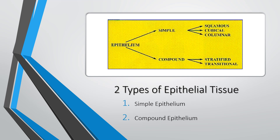Epithelium is divided into two types: simple and compound epithelium. Simple epithelium is divided into squamous, cuboidal and columnar — defined by the shapes of the different tissues. Squamous is squat, cuboidal is square, columnar is column shaped. Then we have compound epithelium, divided into stratified and transitional epithelium, which are also squamous, cuboidal or columnar in shape.